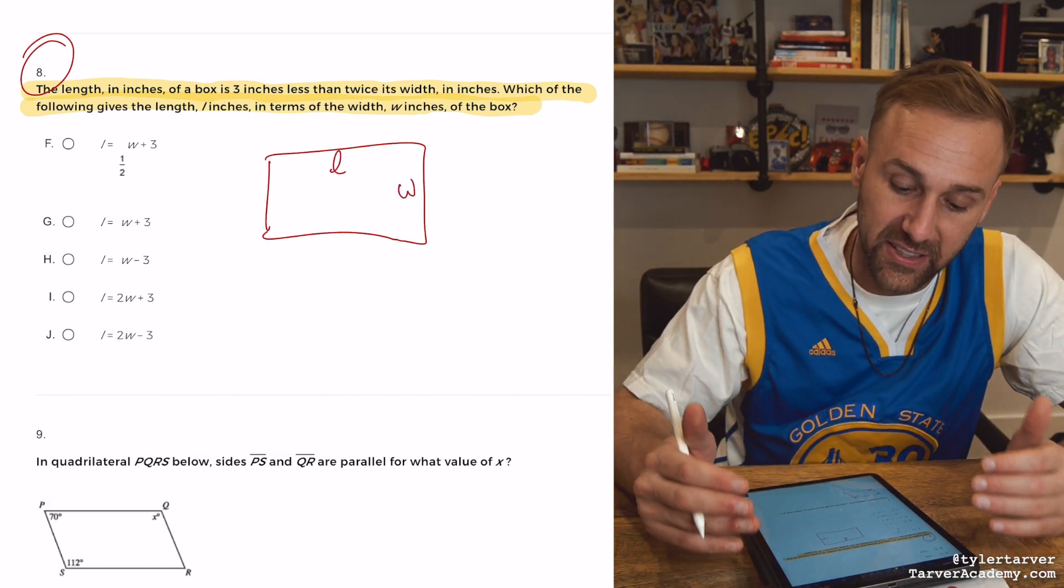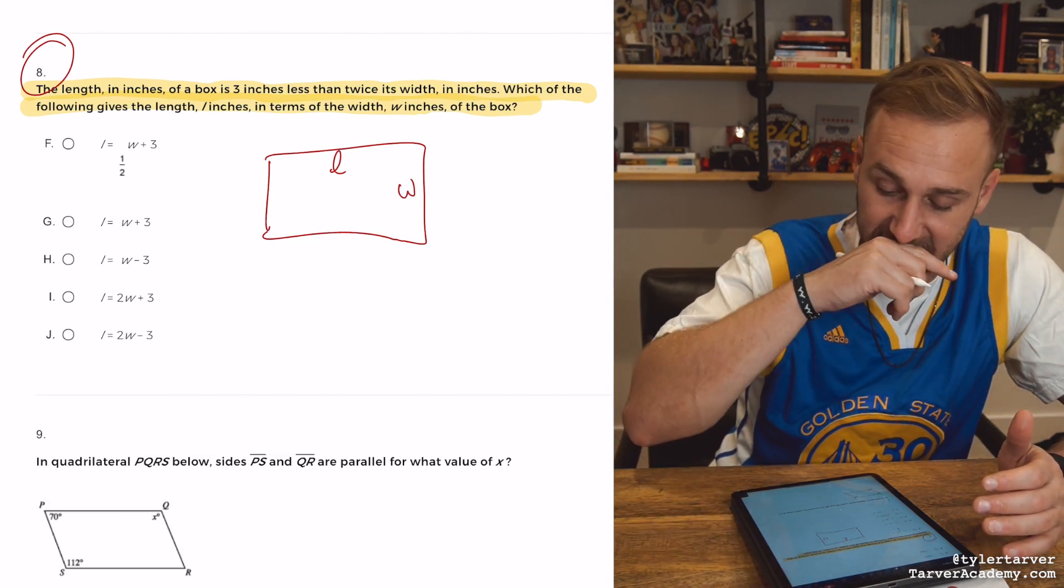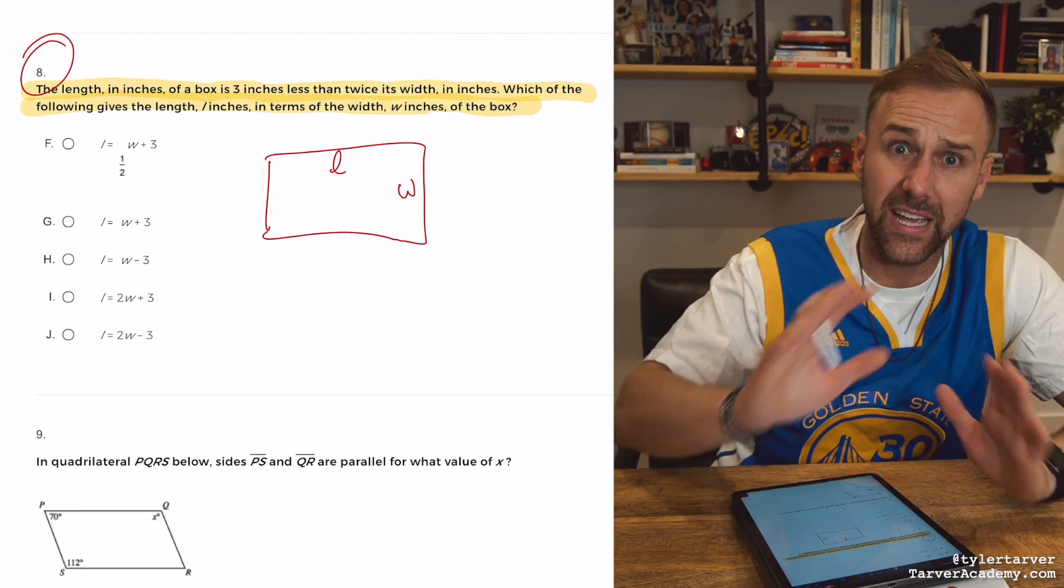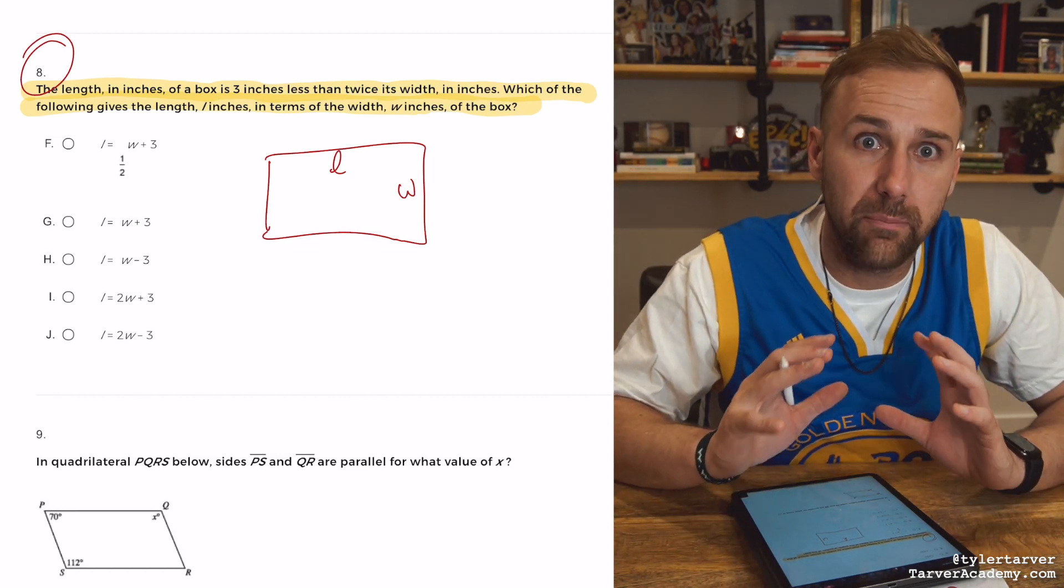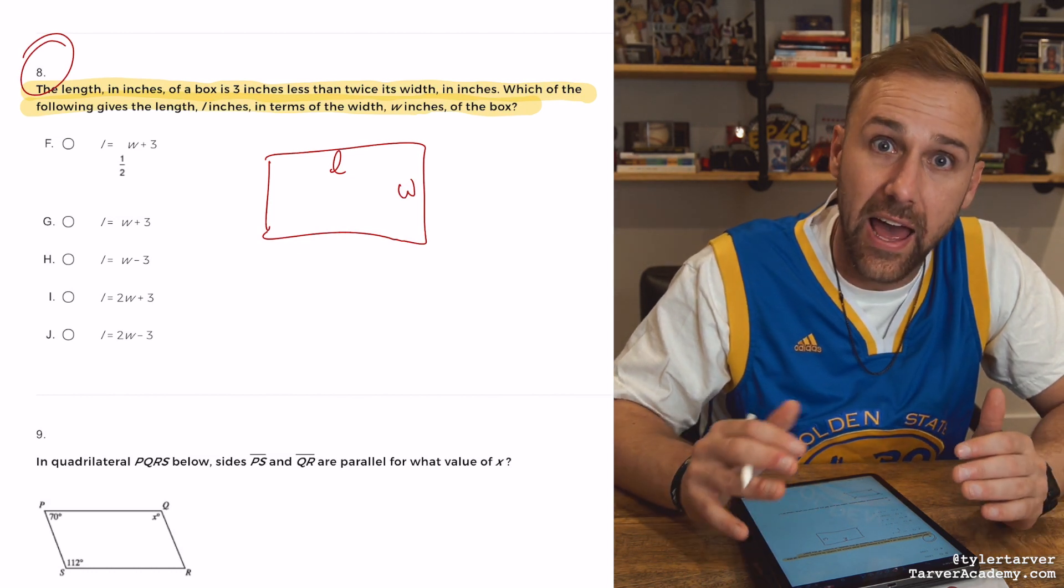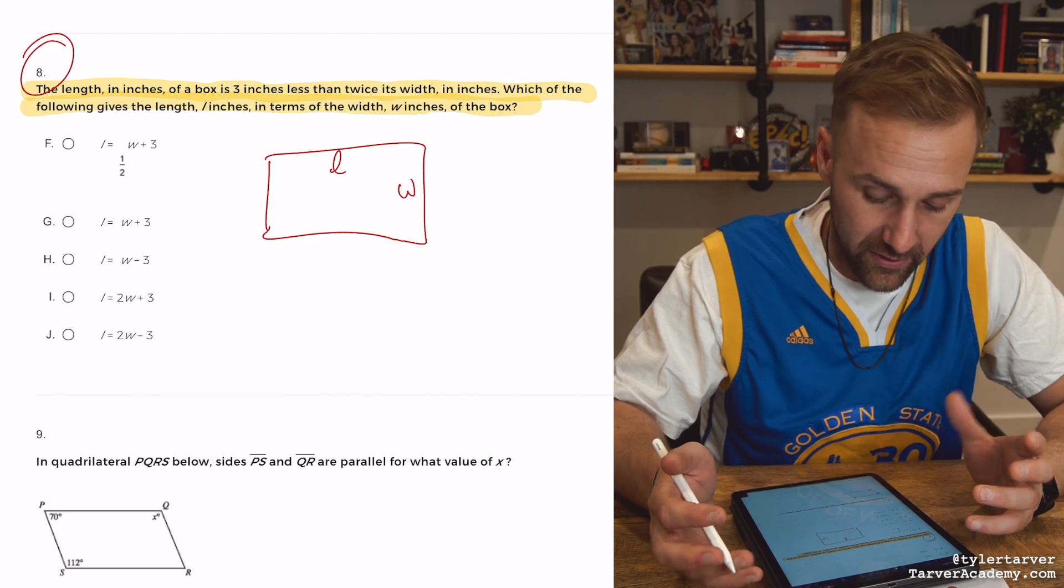The length, in inches, of a box is three inches less than twice its width. In inches. Now, we are building an equation, essentially, to find the length. However, we have something we can use for the width.